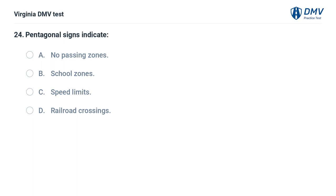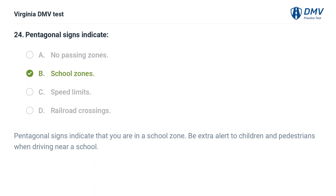Pentagonal signs indicate: A. No passing zones, B. School zones, C. Speed limits, D. Railroad crossings. The correct answer is B: School zones. Pentagonal signs indicate that you are in a school zone. Be extra alert to children and pedestrians when driving near a school.